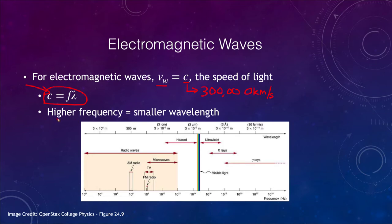A higher frequency will have a smaller wavelength and a higher energy — that would be something like gamma rays. A lower frequency would have a longer wavelength and would be something like radio waves way off to the left, with gamma rays way off to the right. We see that visible light is just a tiny portion of this electromagnetic spectrum, but that is what we studied and used for the longest time.